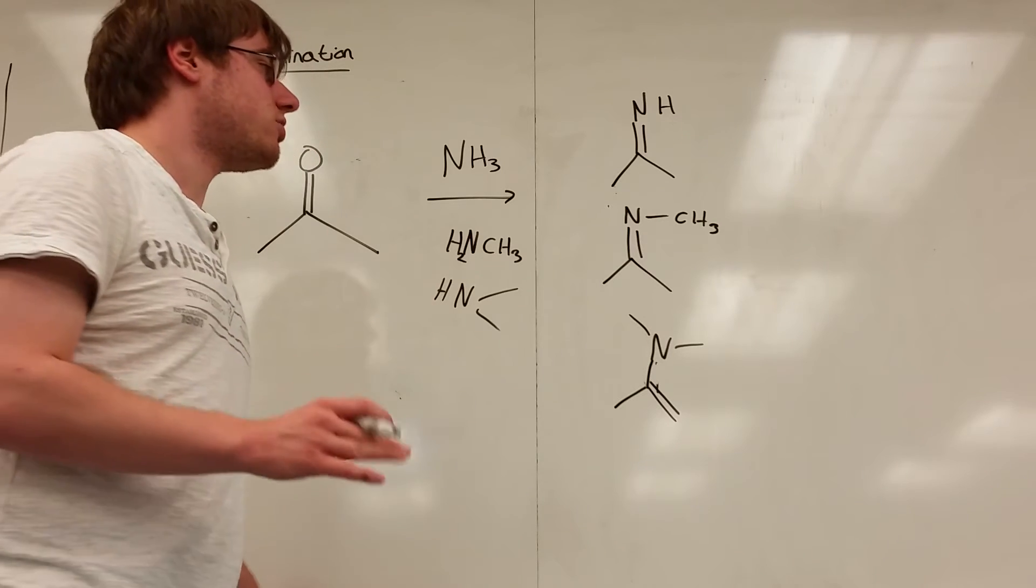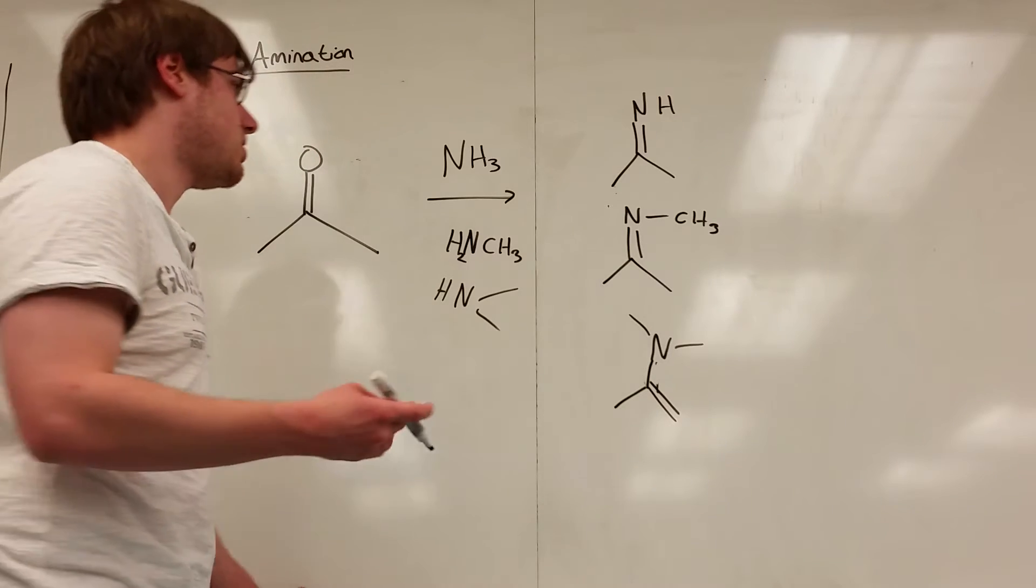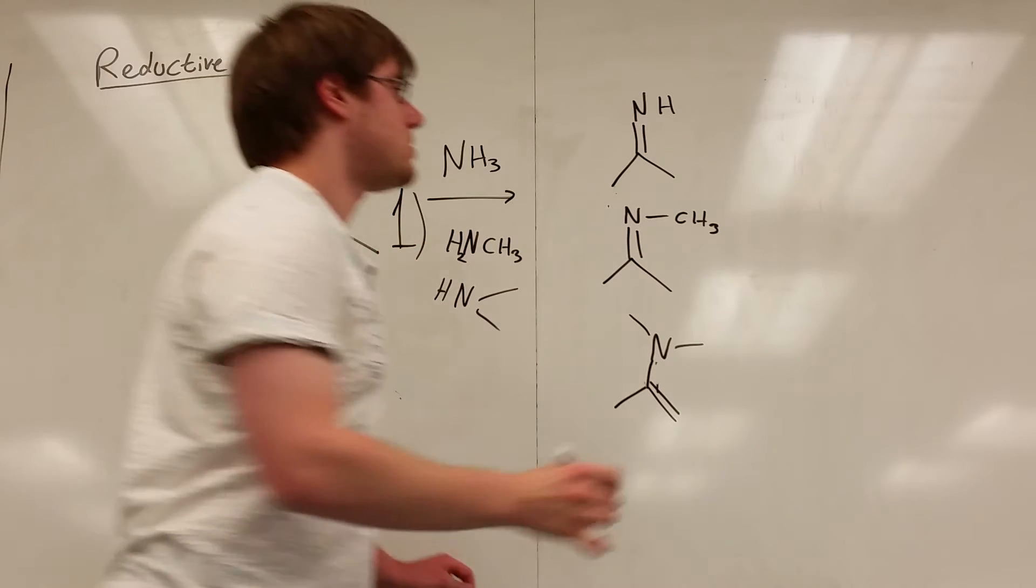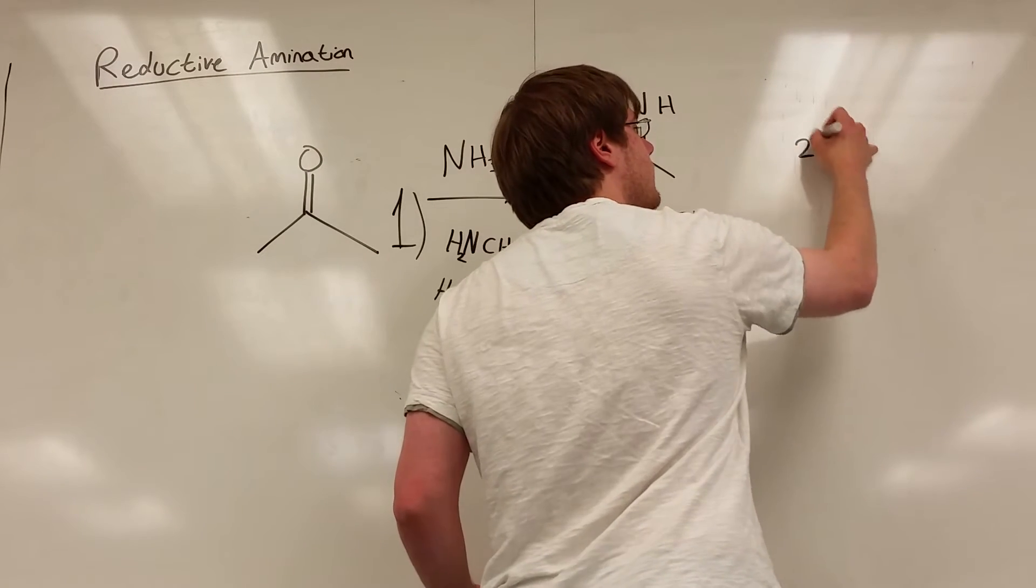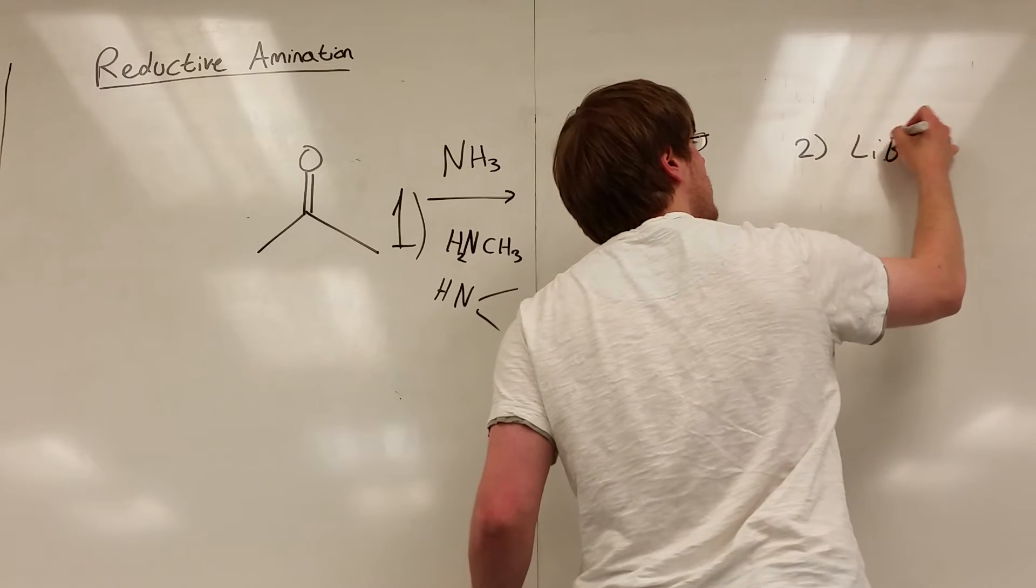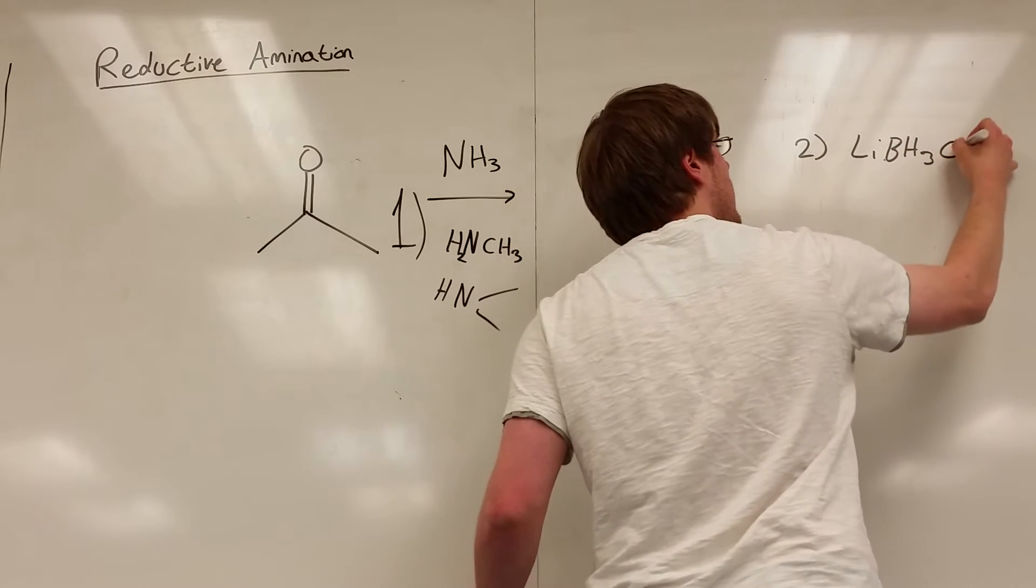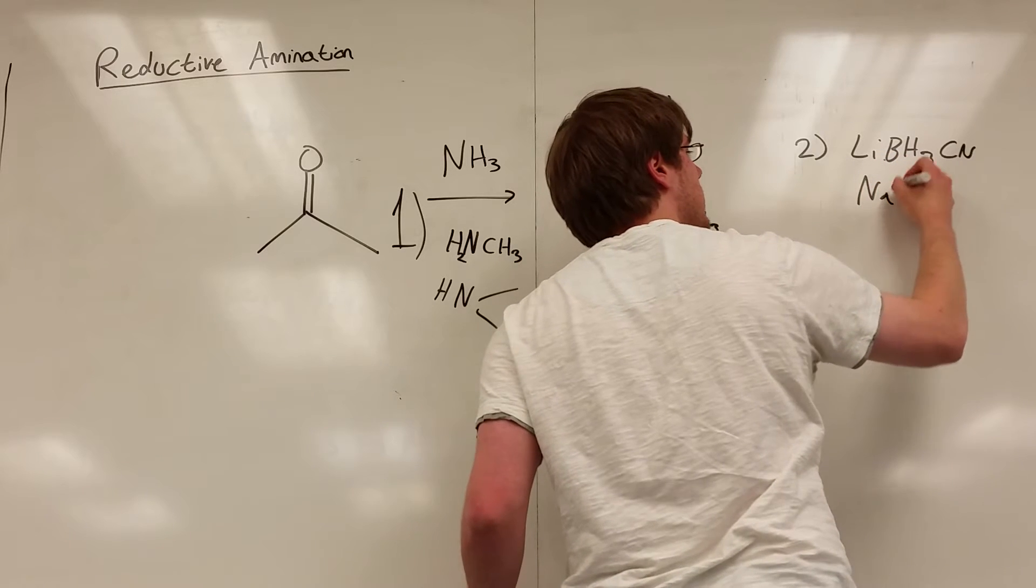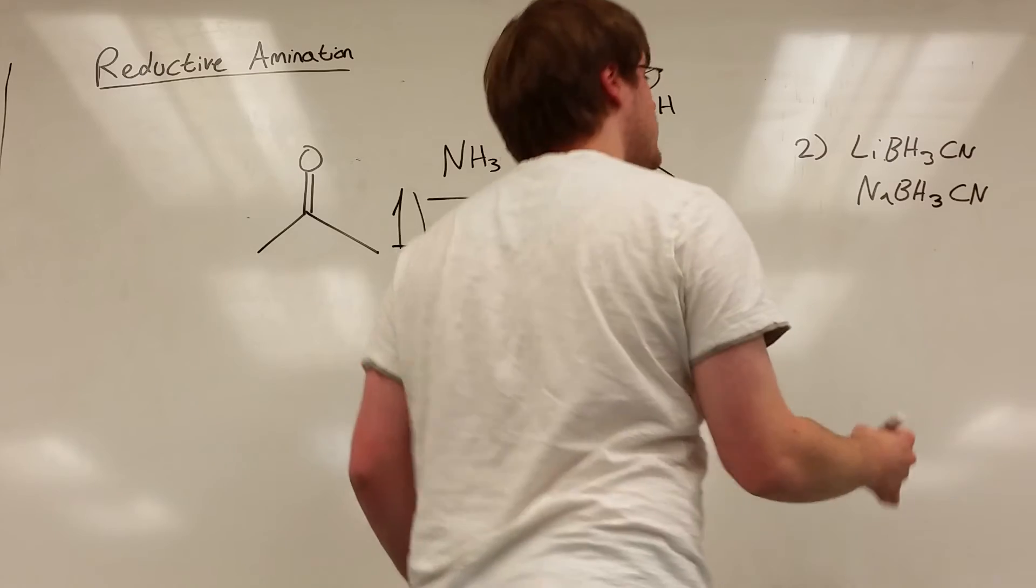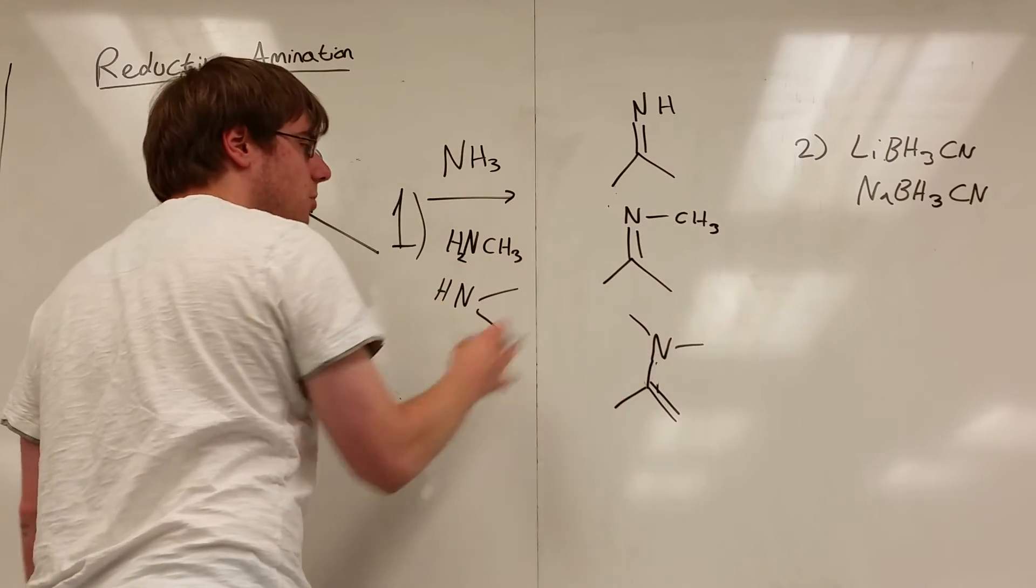Now I wouldn't worry about the particulars of this because the other half of reductive amination is, this is step one, one of these here would be step one and step two would then be LiBH3CN or NaBH3CN. These both do the same thing for your purposes and what this does is it removes the double bond so it becomes a single bond N at the end.